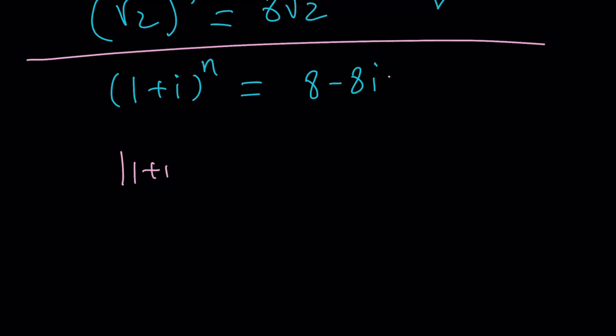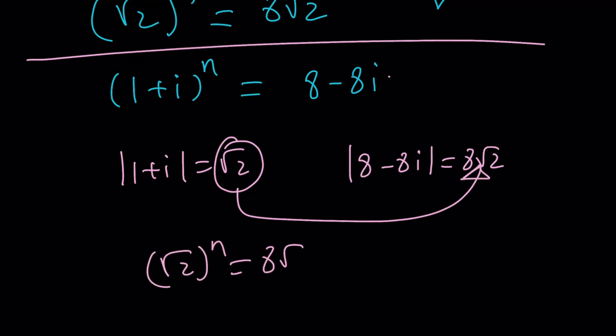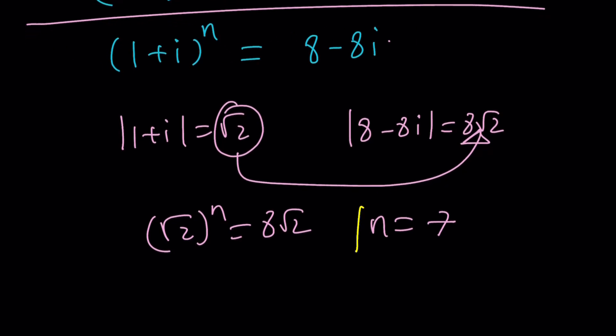What's the absolute value of 1+i? It's √2. What's the absolute value of 8-8i? It's 8√2. How do I get 8√2 from a power of √2? The answer would be n equals 7. And that needs to be satisfied. Of course, there is a general solution that considers all solutions, but I'm going to stop here to keep it simple this time. And this brings us to the end of the video.